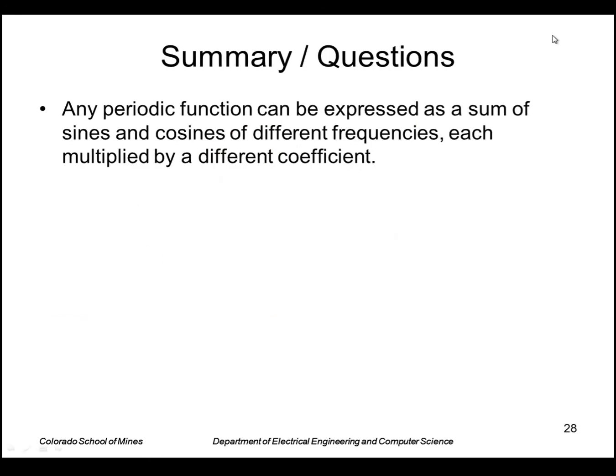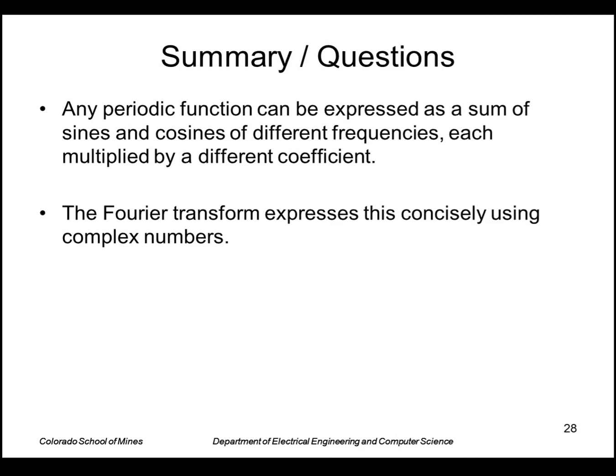In summary, any periodic function can be expressed as a sum of sines and cosines of different frequencies, each multiplied by a different coefficient. The Fourier transform expresses this concisely using complex numbers. Some questions: What is the impulse function? What is the convolution theorem? And what is aliasing?